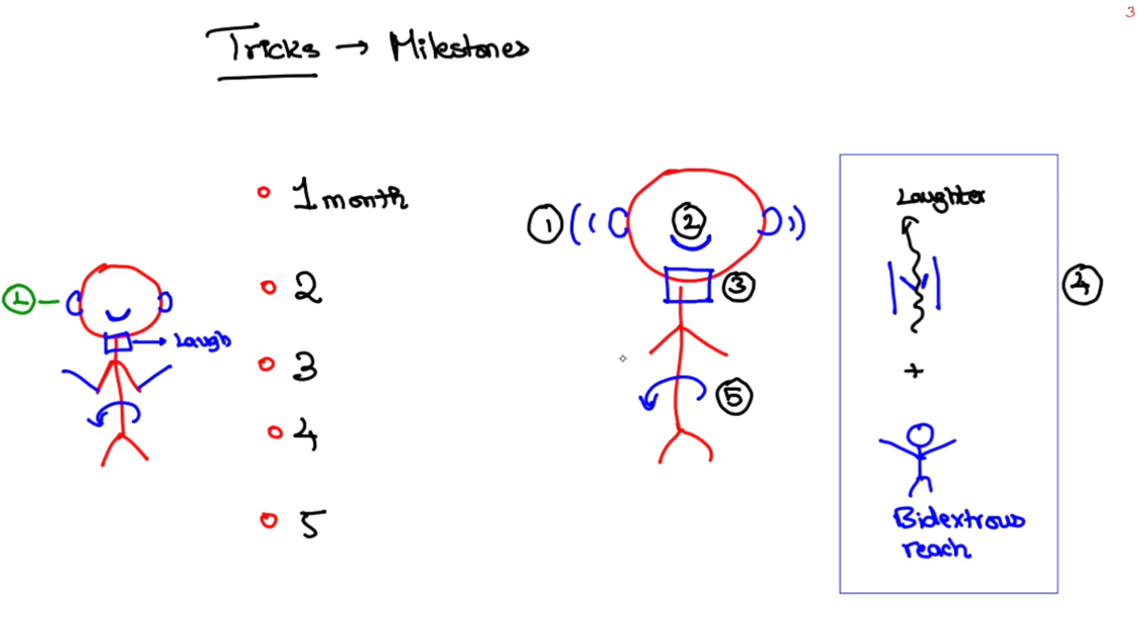Here, alert to sound is under language, social smile obviously social, neck holding is gross motor, laughter is language, bidextrous reach is in fine motor, and rollover is in gross motor.